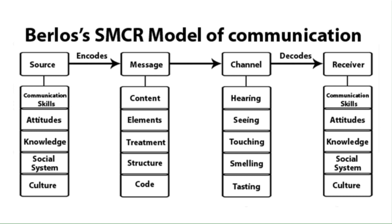The last element under message is code. The code of the message refers to the means through which it is sent and in what form — for example, language, body language, gesture, music, and many more. Even culture is a code. Through this, people give and receive messages and communication takes place. Note: only when the code is clear will the message be clear. Wrong usage of code may lead to misinterpretation.